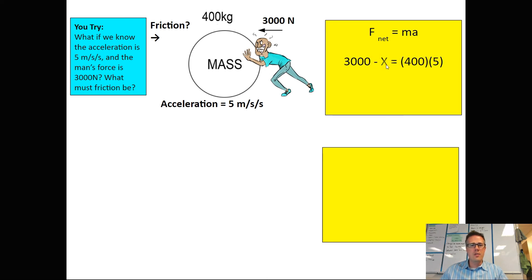So 3000 minus x, I don't know what that friction is, equals the mass of the boulder, 400, times the acceleration that they gave us. Now we have an algebra problem that we can solve.